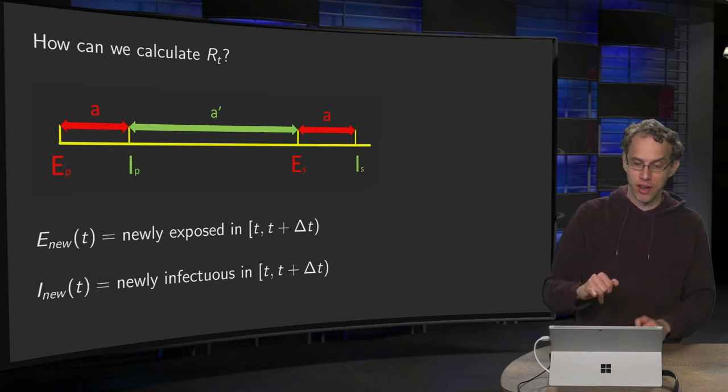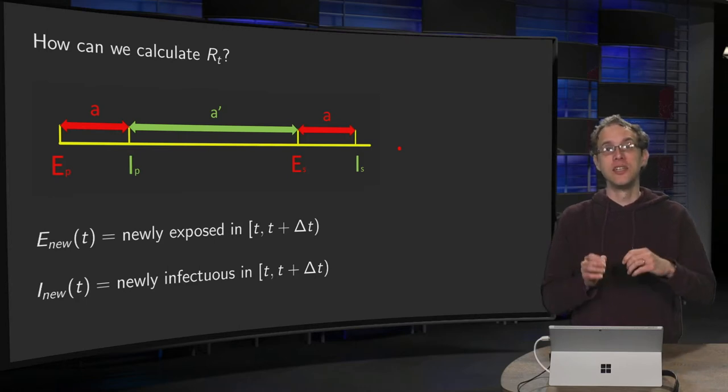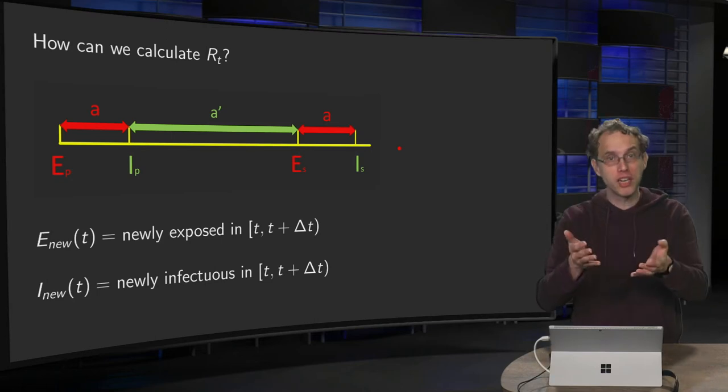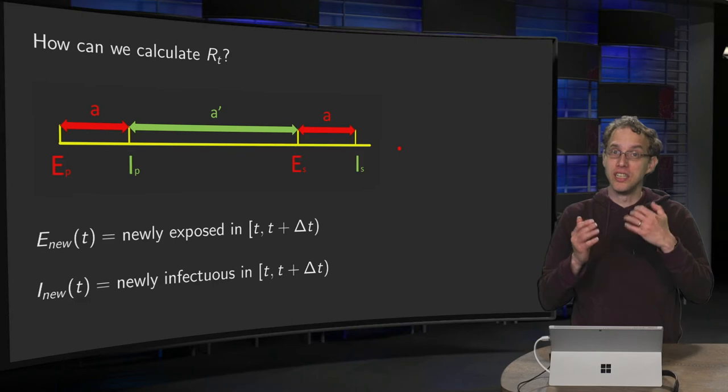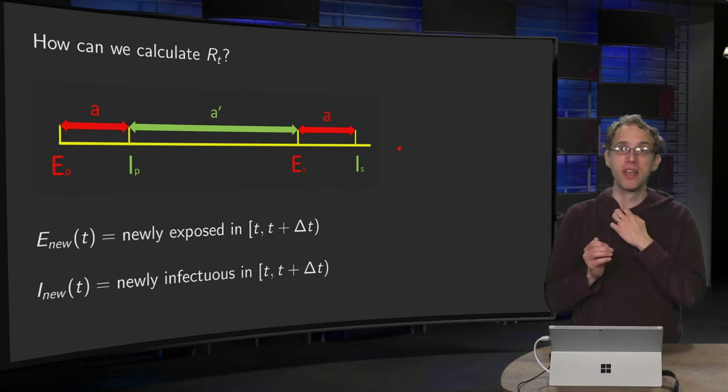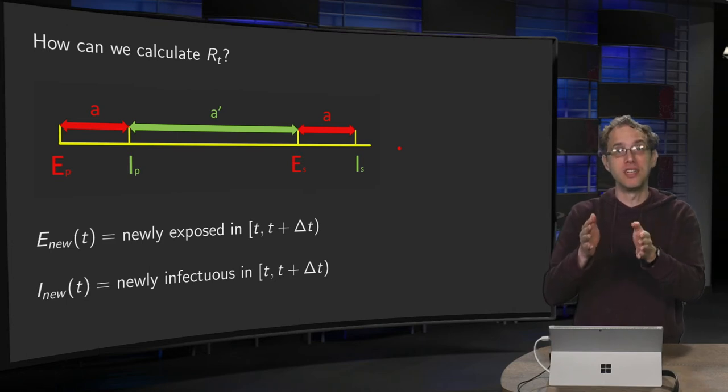So what is the idea? We have here a timeline, and we define E_new, which are the newly exposed people in the time interval t and t plus delta t. So if you have real data, this delta t is typically one day. So you're talking about the newly exposed people who got exposed between say, day three and day four. And similarly, we define I_new, the newly infectious people who became infectious in the time interval t and t plus delta t.